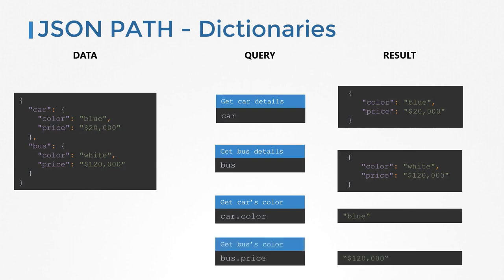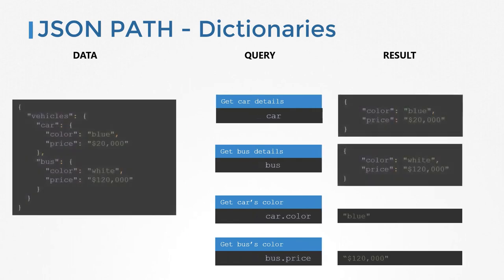Car is a dictionary and bus is another dictionary. To get the price of the bus, use the query 'bus.price'. If car and bus are encapsulated within a dictionary named vehicles, our queries change: we now say 'vehicles.car' to get car details, 'vehicles.bus' to get bus details, 'vehicles.car.color' to get the car's color, and 'vehicles.bus.price' to get the bus's price. That's how dot notation is used to extract properties of dictionaries and dictionaries of dictionaries in JSON data.